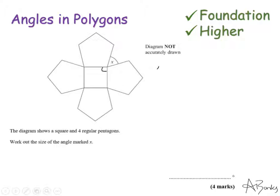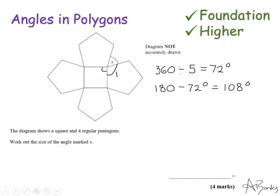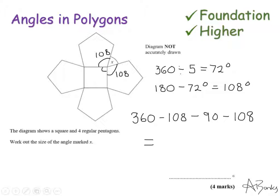Using the second method to find the interior angle of a pentagon: 360 ÷ 5 = 72 degrees for the exterior angle, so the interior angle is 180 − 72 = 108 degrees. I'll label this on the diagram. Angles around a point add up to 360, so: 360 − 108 − 90 − 108 = 54 degrees. The answer for x is 54 degrees.